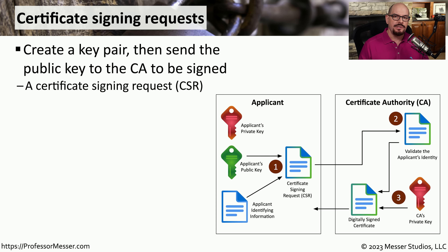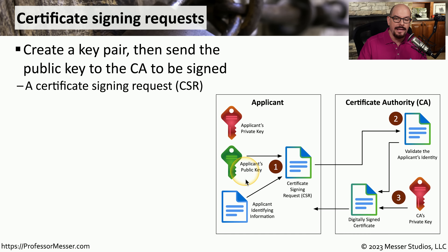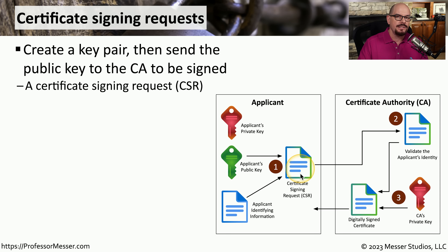Let's say we'd like to create a certificate for our web server and send that certificate to a certificate authority to be validated, have them digitally sign it, and return it back to us. We would first create a certificate signing request, or CSR, by using our public key, adding identifying information about what server this is connected to and information about our organization, and combining those together.